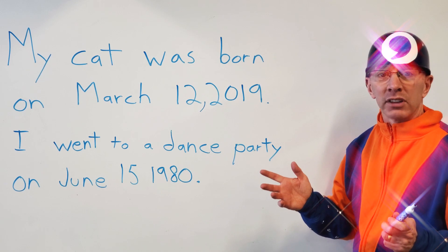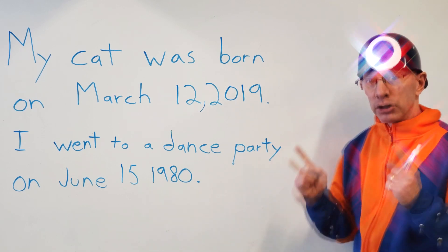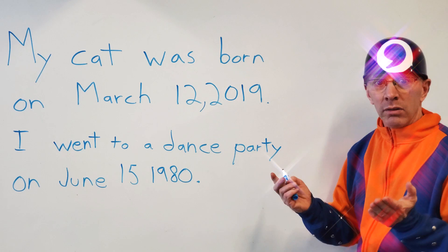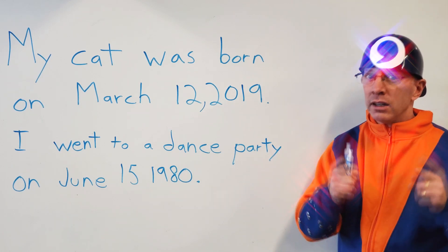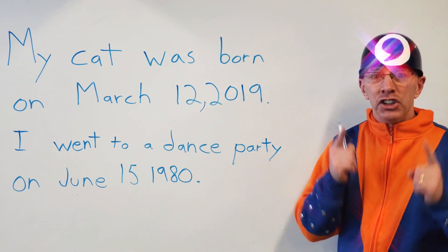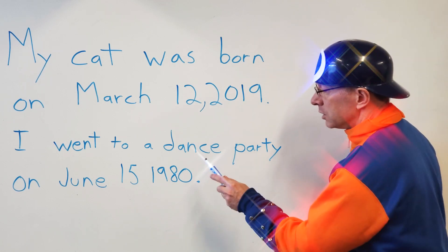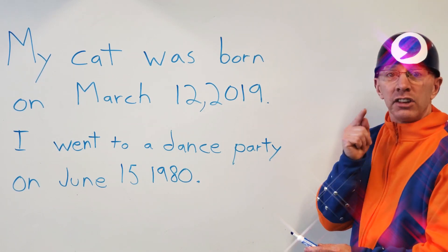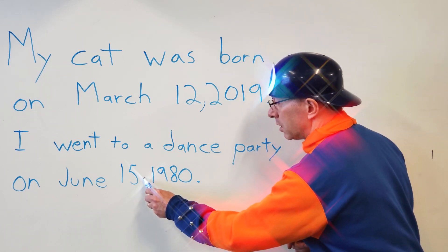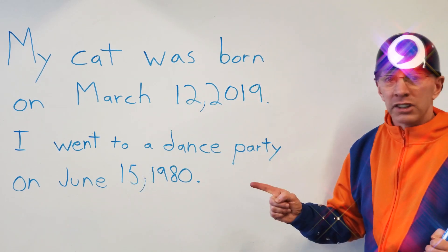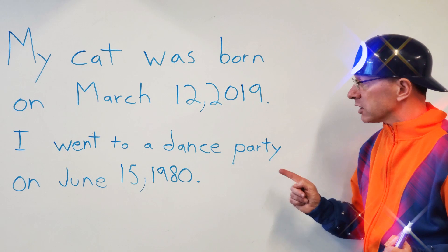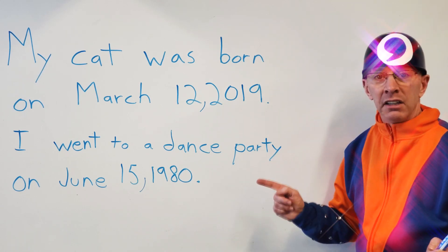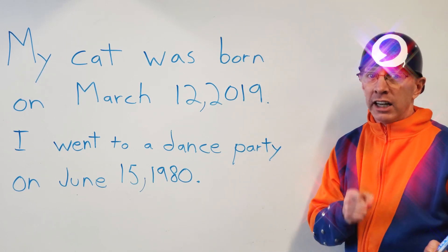I didn't go to a party in the future — I went back in the past. We need to figure out where to put the comma; that's my job. What's the rule? That's right — we separate the day and the year. June 15th is the day, 1980 is the year. 'I went to a dance party on June 15, 1980.' That was an awesome time — Vanilla Ice, MC Hammer!